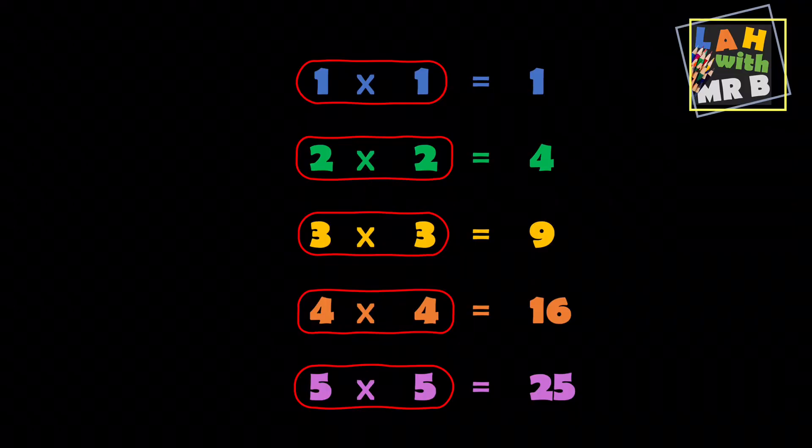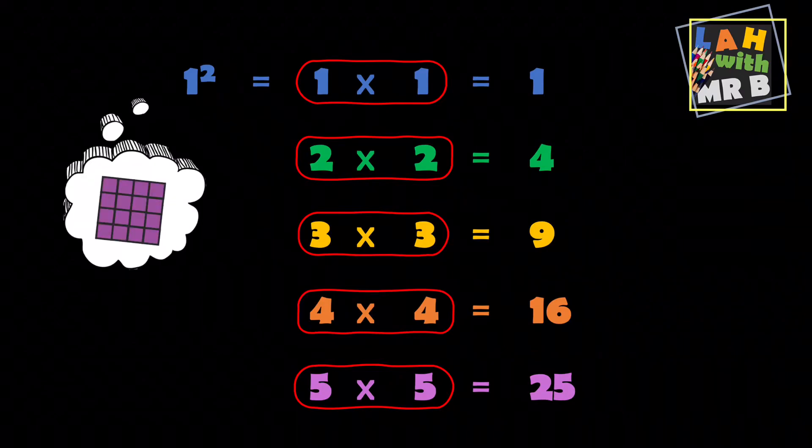You don't always have to write it out like this though. In fact there's a shorter way of writing it. Instead of writing one times one, people sometimes just write one with a little two up at the top like that. This little two means squared, so that number is one squared. And really what you're thinking in your head when you say one squared is you're thinking of the number one turned into a square like we just did before.